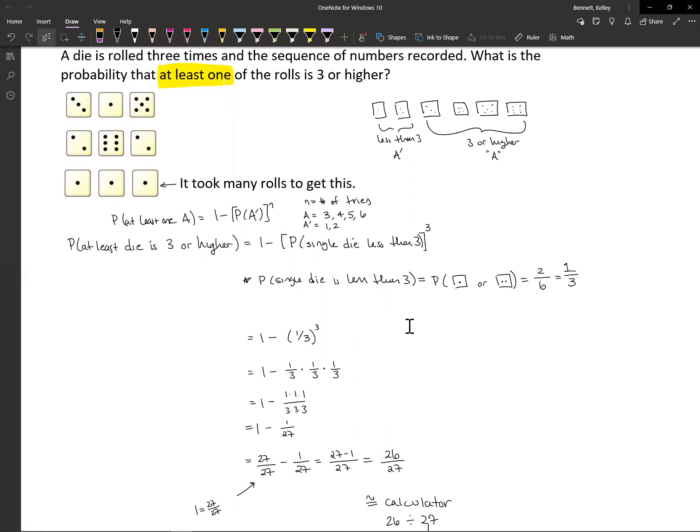We knew the probability of having a role where at least one of the guys was three or higher, we expected that to be high. And guess what? It was. It was 26 over 27, which is a high number. So again, in probability, high probability means you're close to one, low probability means you're close to zero.